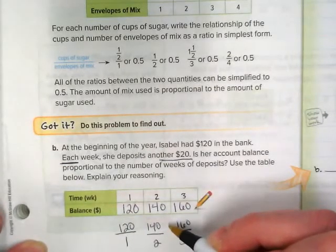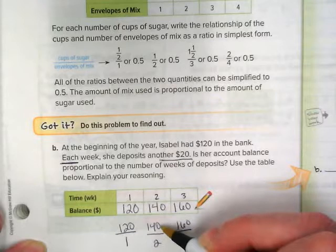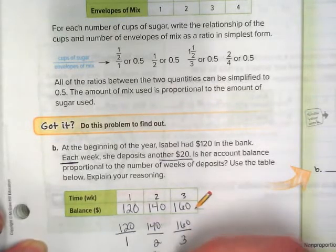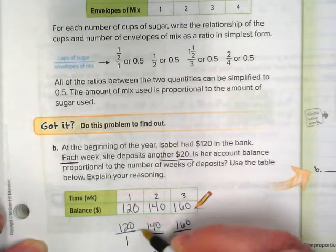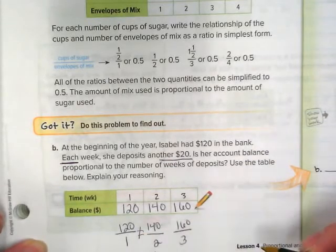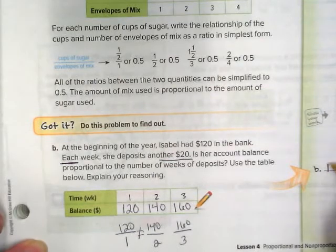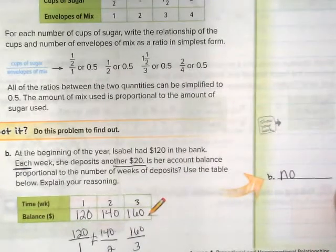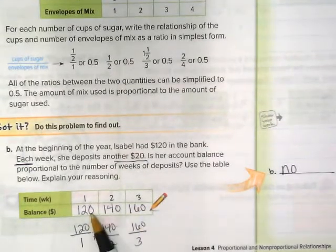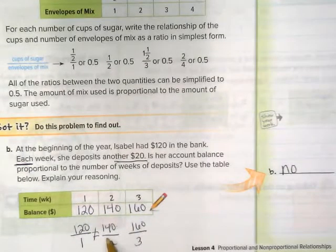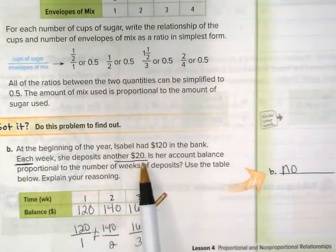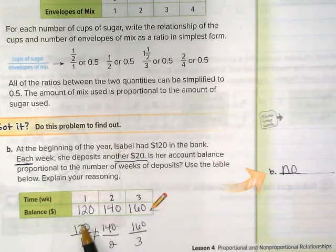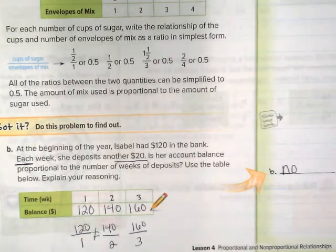We want to see if these become proportional. If I do 140 divided by 2, I get 70 over 1. That is not proportional to 120 over 1. So the answer would be no. These are not proportional because the first week and the second week do not equal each other. She started off with $120, and even though each week she's adding another 20, because of that first week these are not going to be proportional.